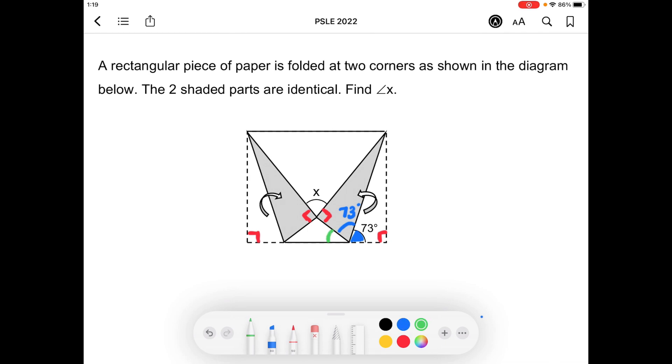In green here, that will be 180 degrees take away 73 degrees times two, and you will get 34 degrees. So this is 34 degrees, and this angle in green here will also be 34 degrees because